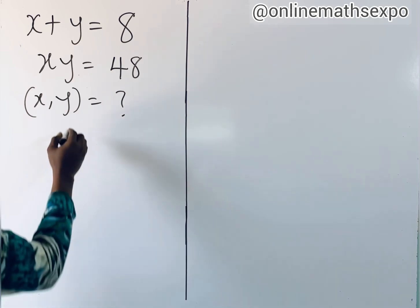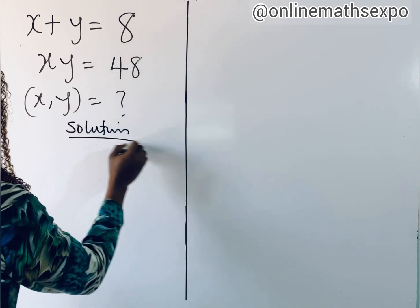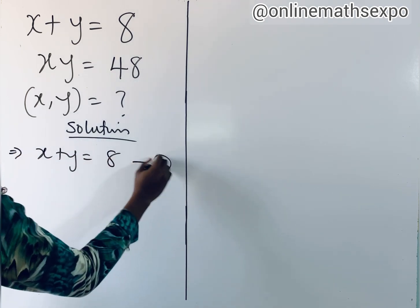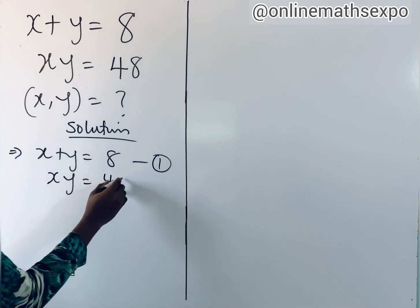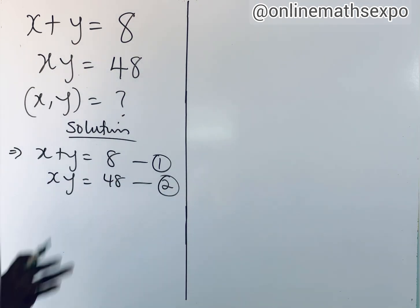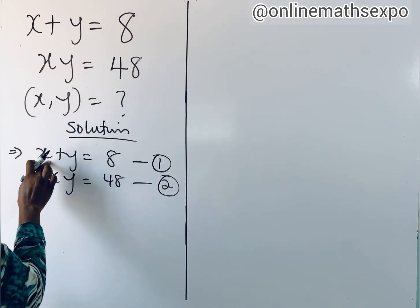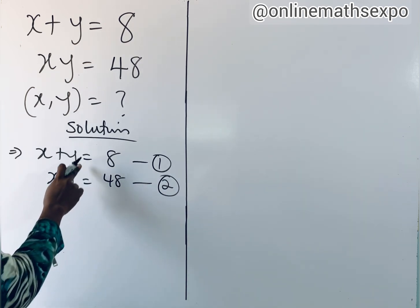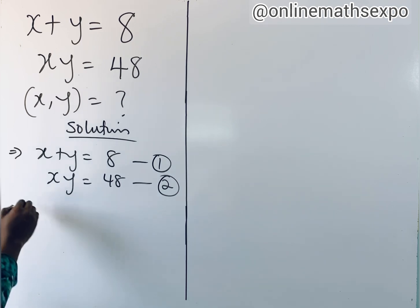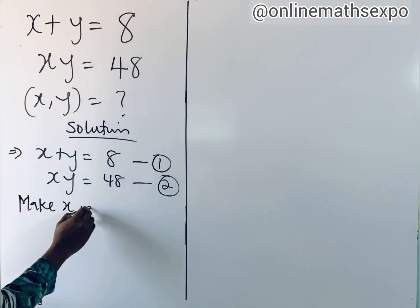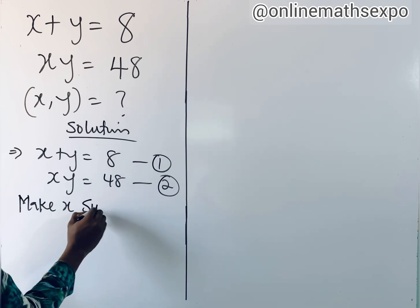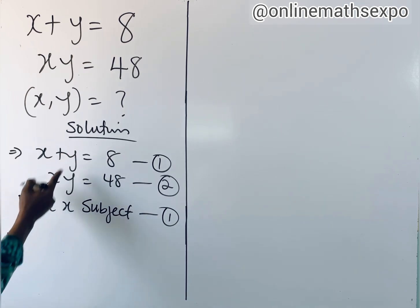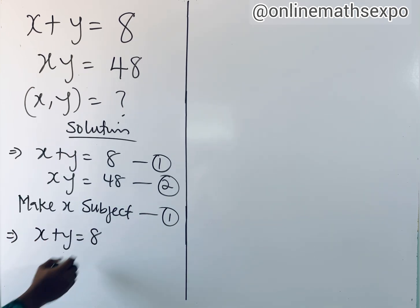To solve this, we are going to begin with the solution. So let's repeat what we have: equation one and equation two. What you simply need to do is either make x the subject from equation one and substitute into equation two, or make y the subject and do the same. Let's make x the subject in equation one.